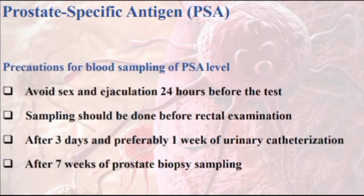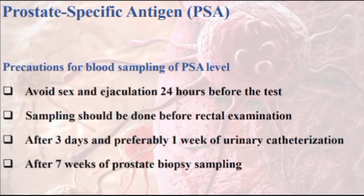The following conditions can increase PSA levels, so for sampling these tests, the following must be observed: avoid sex and ejaculation 24 hours before the test; sampling should be done before rectal examination; in patients who have undergone catheterization due to urinary retention, it is best to have a prostate test after 3 days and preferably after a week; and a prostate biopsy can increase PSA for up to 7 weeks.